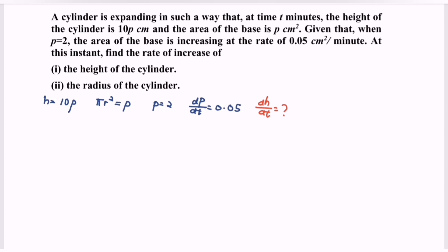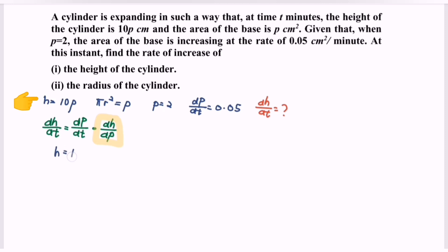Step 2 is to draft the chain rule, where dh/dt is equal to dp/dt multiplied with dh/dp. We need to differentiate h with respect to p. Since h is equal to 10p, differentiating h with respect to p gives us 10.